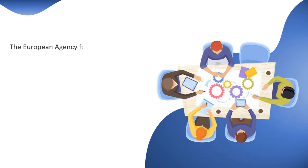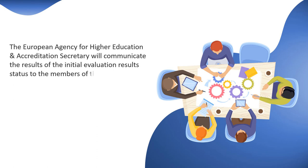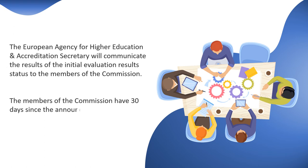Announcement. The European Agency for Higher Education and Accreditation secretary will communicate the results of the initial evaluation status to the members of the commission. The members of the commission have 30 days since the announcement to review and amend the conclusions and grades of the initial accreditation report.